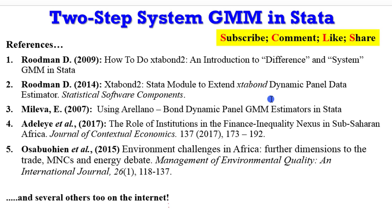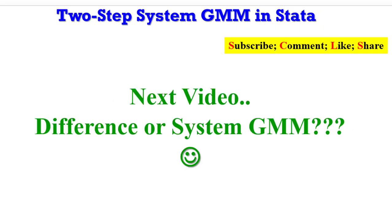I will always encourage you to read articles to see how they stipulated their models using the system GMM procedure. So you can read up some of these papers and also go on the internet to see several papers that use the system GMM procedure. In my paper here indicated the number four. I used the two step system GMM procedure. So I will encourage you to check it out. The next video is on how you can decide between either using the difference or system GMM.